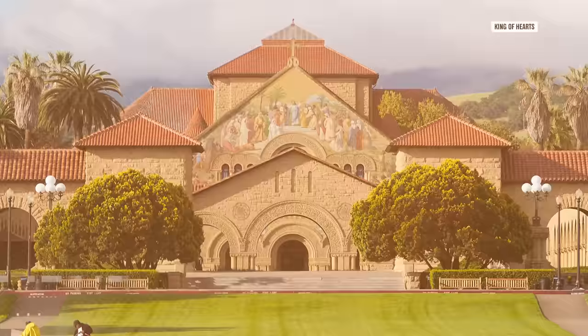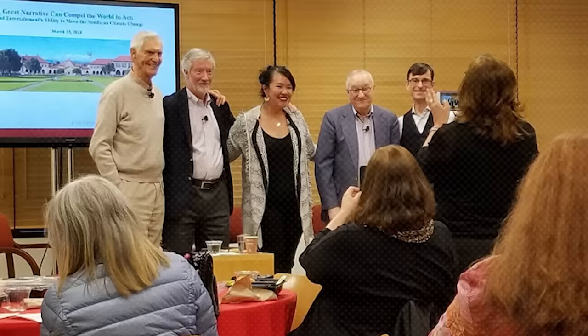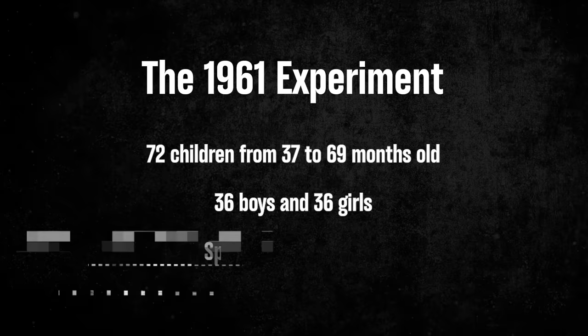In 1961, Bandura began the first of three experiments he would conduct to test his social learning theory. Since he had been a professor at Stanford University since 1953, the most logical choice was to use children from the university's preschool. Stanford had a lot of graduate students who were also parents, so the preschool would always have a steady supply of test subjects. For the 1961 experiment, he selected 72 children ranging from 37 to 69 months old — 36 boys and 36 girls — evenly split into three groups.